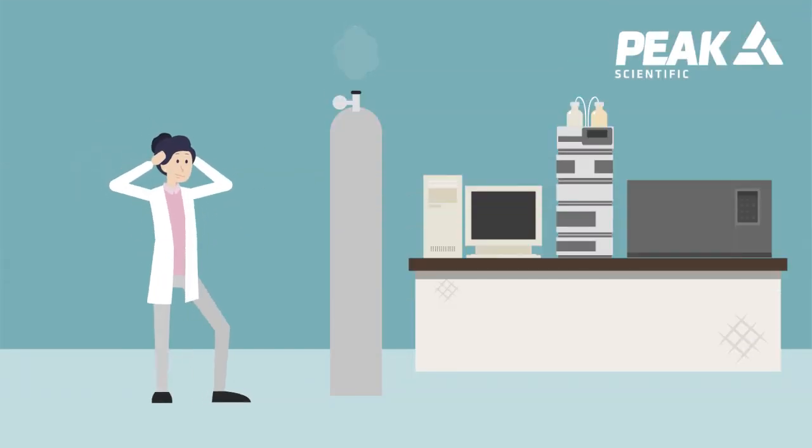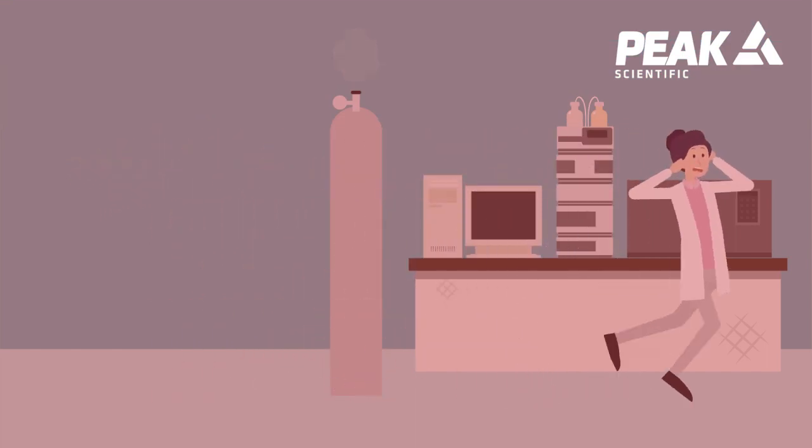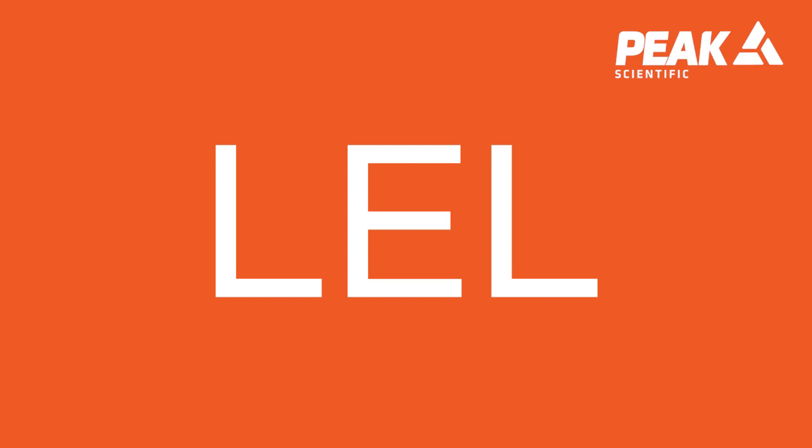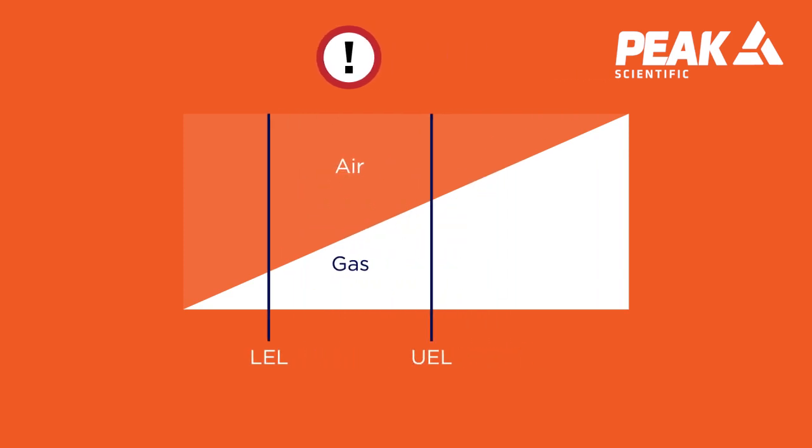If your hydrogen gas cylinder develops a leak this can extremely quickly fill your lab with explosive gas which risks reaching the lower explosive limit or the LEL. The LEL is the lowest concentration of a gas or vapor that will burn or explode if ignited and it can vary from gas to gas.